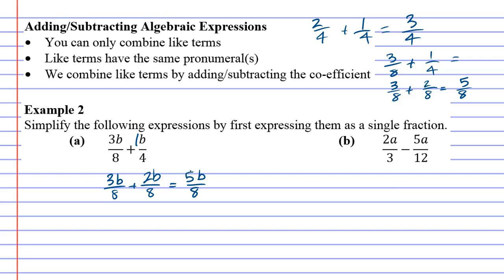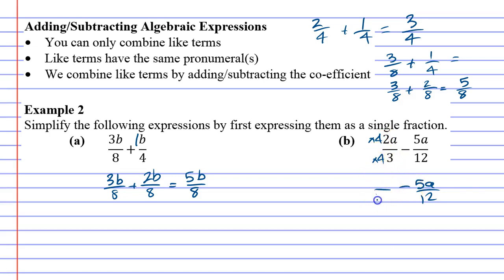Let's look at question B. Question B is a bit trickier — the denominators are both different. We're going to keep the 5A over 12 the same, but we've got to change the first fraction to make it over 12. So we're going to multiply by 4 on both the top and the bottom, remembering you must do the same to the top and bottom. Because if I multiply by 4, 3 times 4 is 12, and 2A times 4 is 8A.